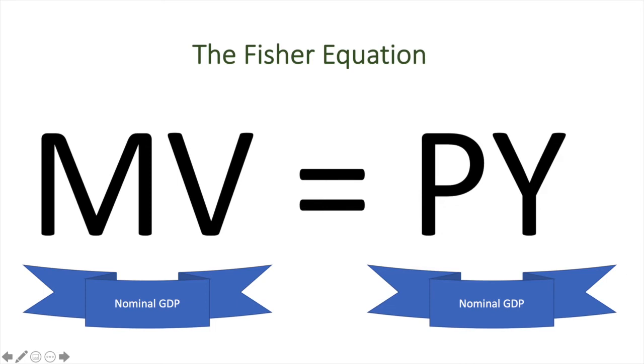Another way to see this is to understand that the value of final goods and services purchased in a year will be equal to nominal GDP. Equally, the value of final goods and services produced and sold in a year will also be equal to nominal GDP.